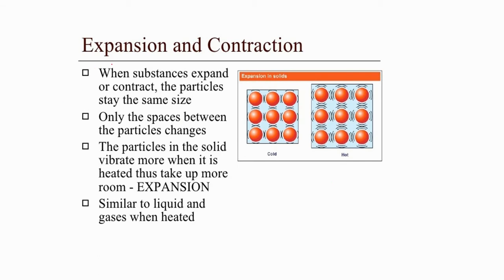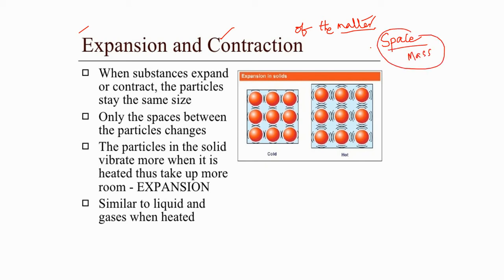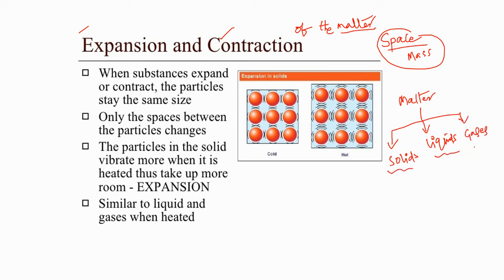If you observe the slide, my dear students, expansion and contraction of matter we are going to discuss in this class. Matter is anything that occupies space and has mass. Based on physical properties, matter is classified into three types: solids, liquids, and gases. On all three types of matter, we can show expansion as well as contraction.